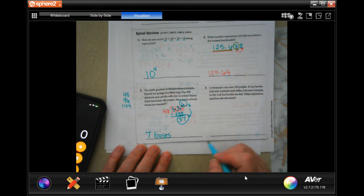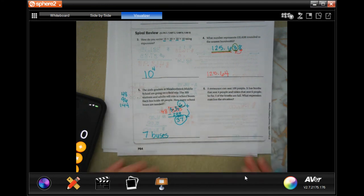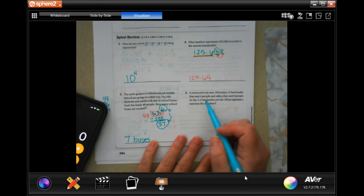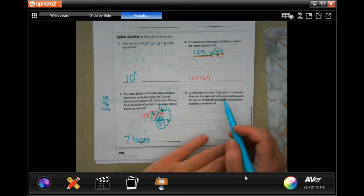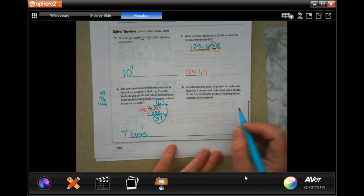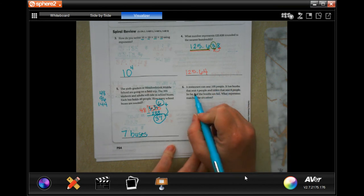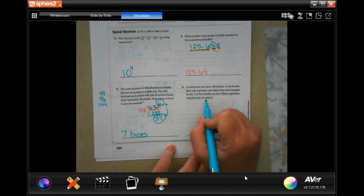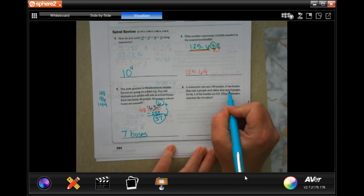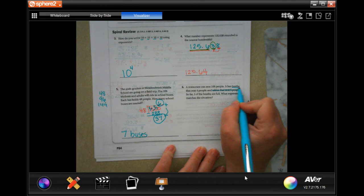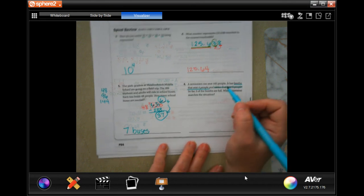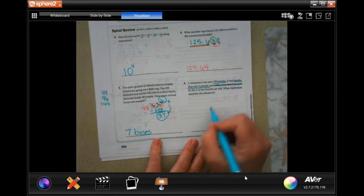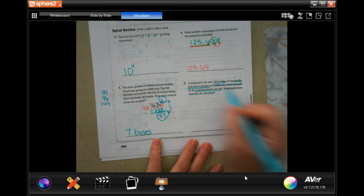A restaurant can seat 100 people. It has booths that seat 4 people and tables that seat 6 people. So far, 5 of the booths are full. So we didn't actually need to know this information. A booth that seats 4 people, 100 people, so far 5 of the booths are full.